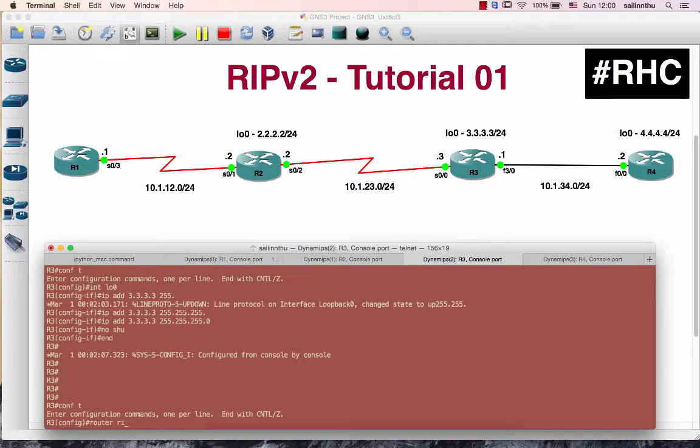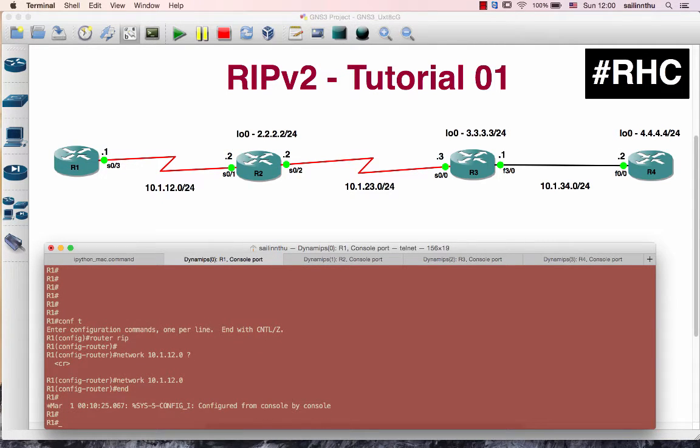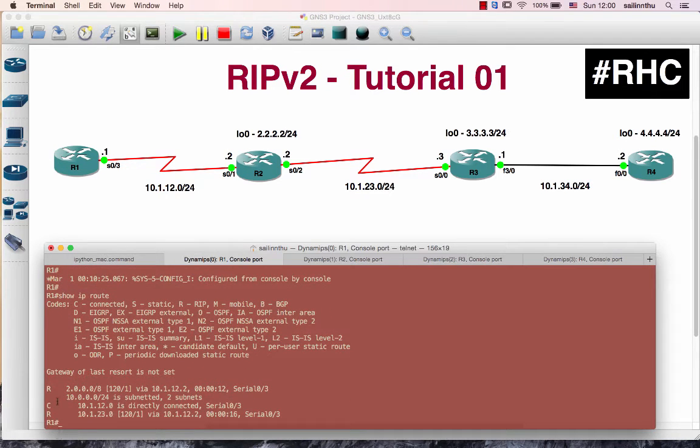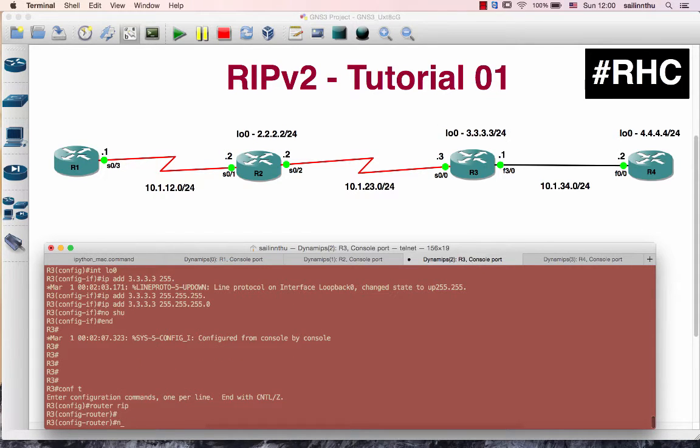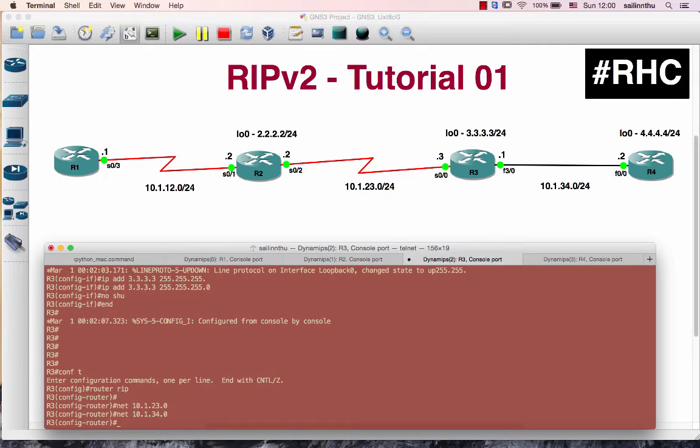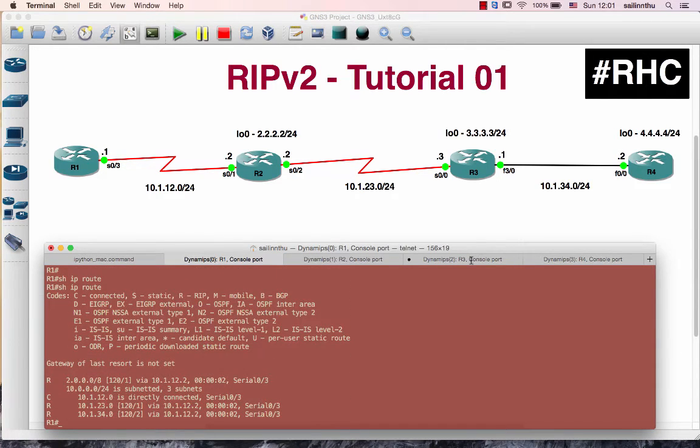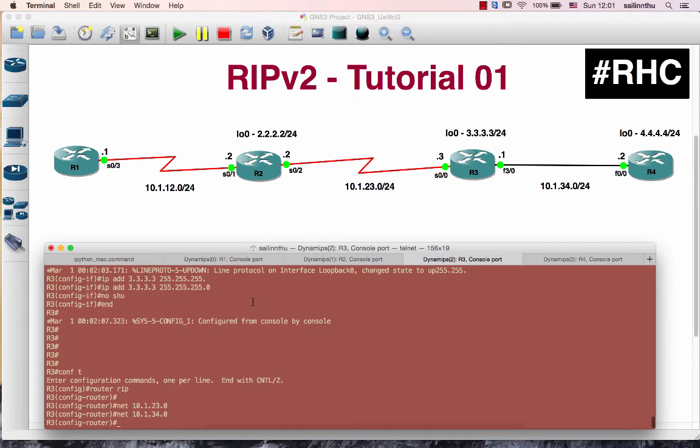Router 3 configuration. The route is connected. RIP routes are being learned. Router 3 has network 10.1.23.0 configured. Network 10.1.34.0 is also configured. Three networks configured on router 3. The RIP routes are being propagated.